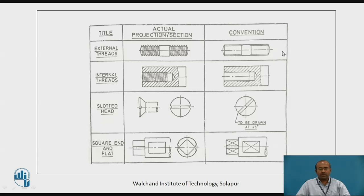Let us go with the further BIS conventions. Many a times, fasteners — that is screws, nuts, bolts, etc. — are having threaded geometry from the internal side or the external side, on the peripheral side, either outside or inner side. Every time to show and represent the threaded geometry in the actual drawing is a bit difficult. Instead of that, two parallel lines can be used to represent the threaded geometry. This can be seen in the first two diagrams.